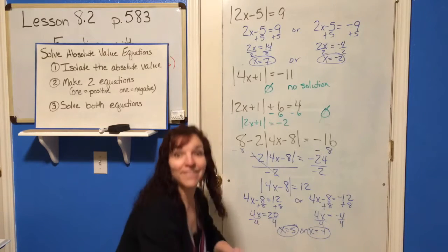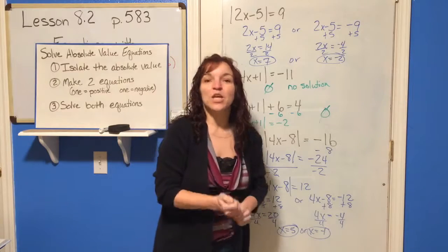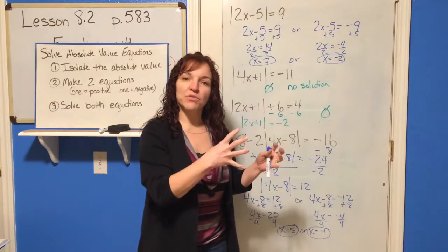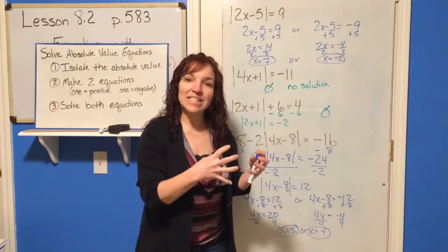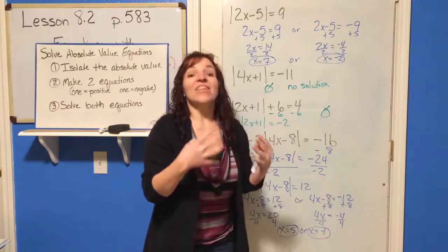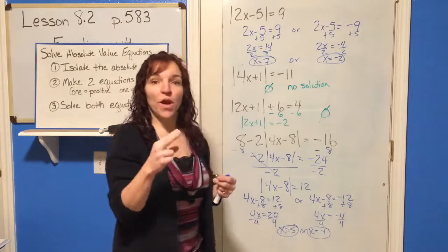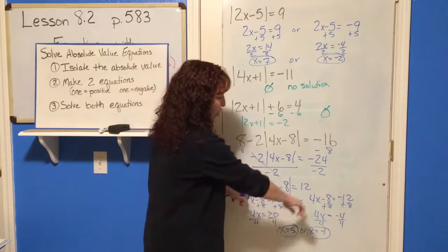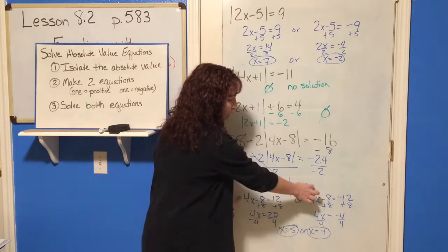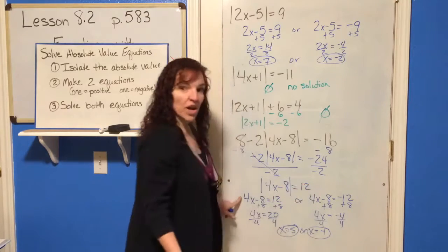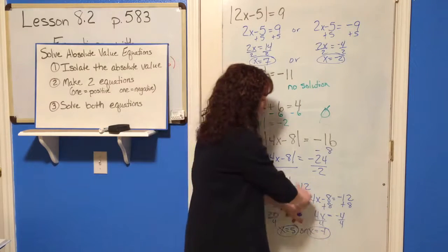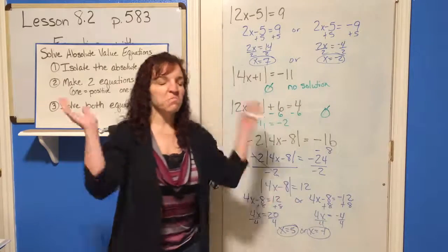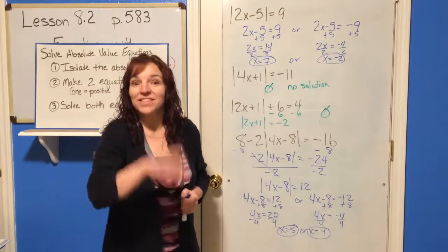And you're done — quick, easy lesson. Make sure you isolate that absolute value, get it by itself. Then don't forget to set up two equations: one equal to the positive of your constant and one equal to the negative of your constant. Then just solve it. You can do this.